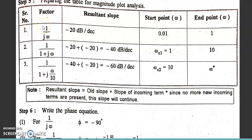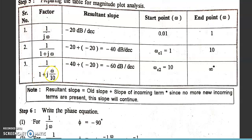For the magnitude plot, we have seen this table: the slope of the 1/(jω) term is -20 dB per decade, and it starts from 0.01 to 1. Then the resultant slope for the second term will be -20 initially plus -20, that is -40 dB per decade, and it starts from 1 till 10. Then for the third term, 1/(1 + jω/10), the resultant slope is -20 - 40 + (-20) for this term, that is -60 dB per decade, and it starts from 10 and ends at infinity.